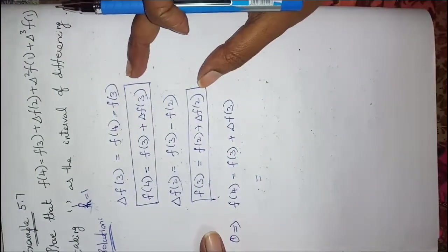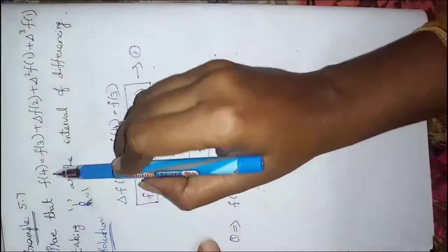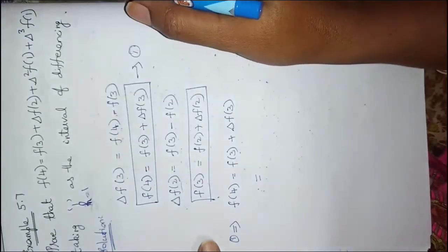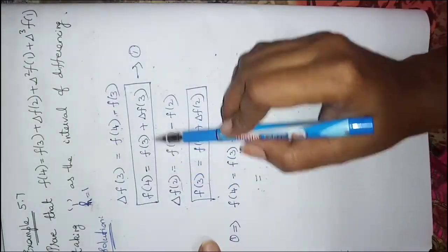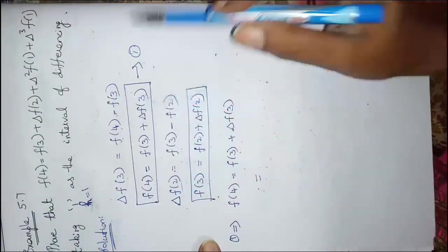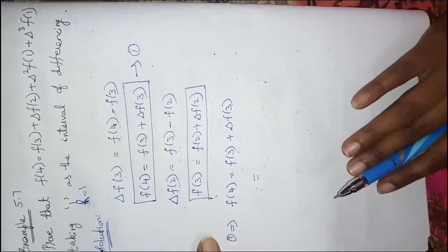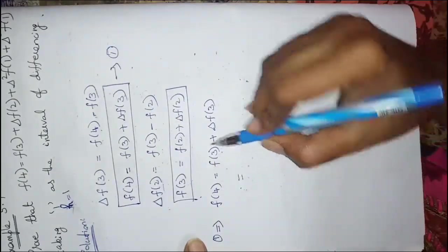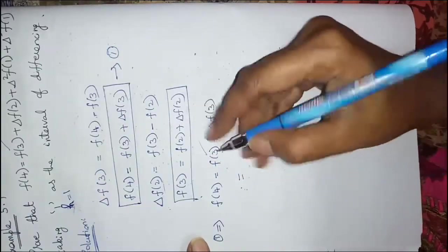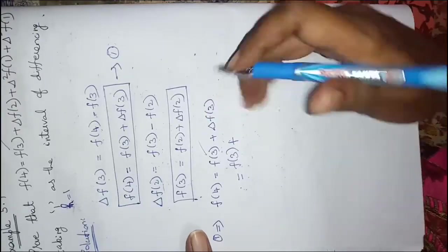Now let's look at the proof. If you use these two conditions, it will be easy to prove it. If you use the first one, f(4) = f(3) + something. Using both conditions, you will find f(4) = f(3) + something. So I will apply these and get f(4) = f(3) + Δf(3). Using f(3), you will have a modification, so f(3) + Δf(3).